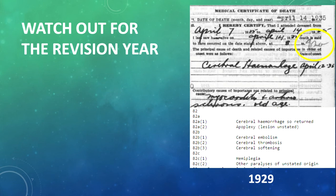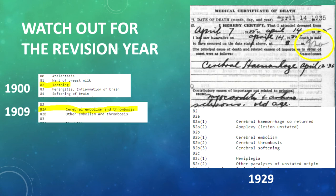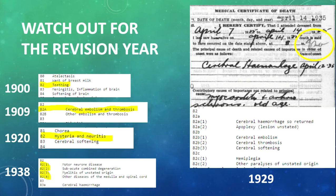You want to watch out for that revision year. With our original cerebral hemorrhage certificate showing number 82, if I had looked at any other year I would have gotten totally different results. In 1900, number 82 represented teething; in 1909, cerebral embolism; in 1920, hysteria; in 1938, motor neuron disease. It would be a little funny to have cerebral hemorrhage written as your cause of death and transcribe it as teething. So definitely make sure to watch out for that revision year.